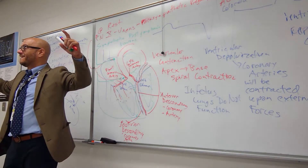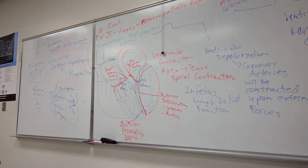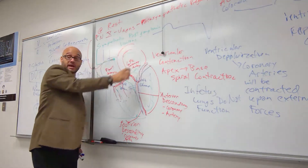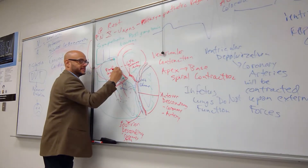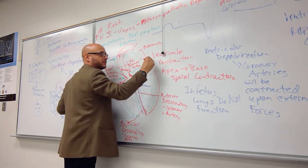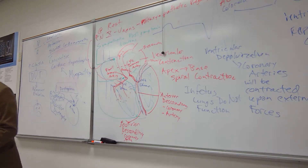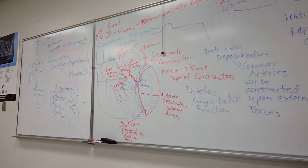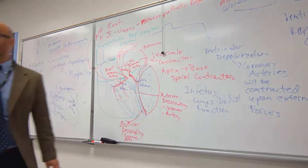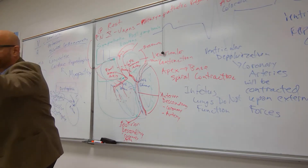The heart gets its blood supply from two arteries that are the first branches off the aorta. Whether I ask 'what are the first branches off the aorta' or 'off the ascending aorta,' the answer is the same — the coronary arteries. The heart gets first dibs on blood supply; it won't steal oxygen from blood passing through the chambers but waits to receive supply when the ventricles relax.